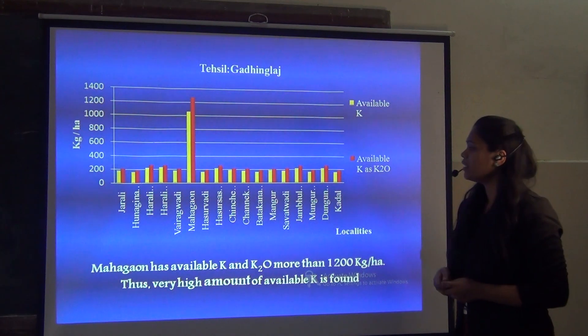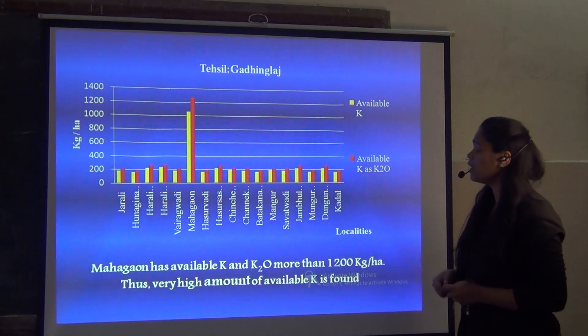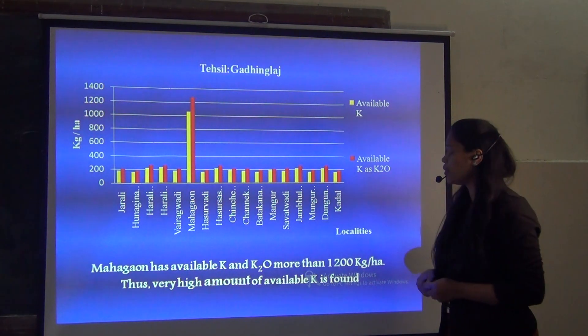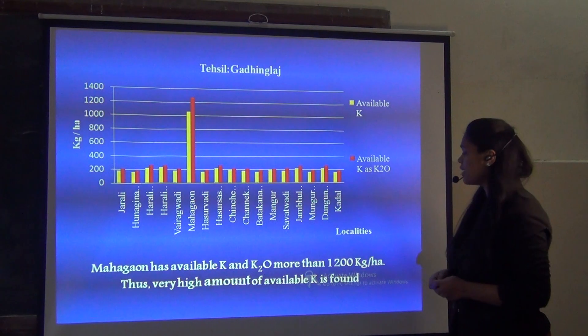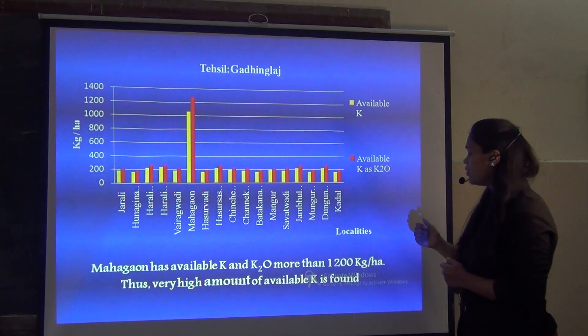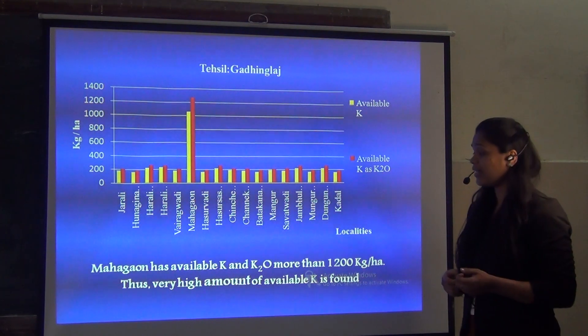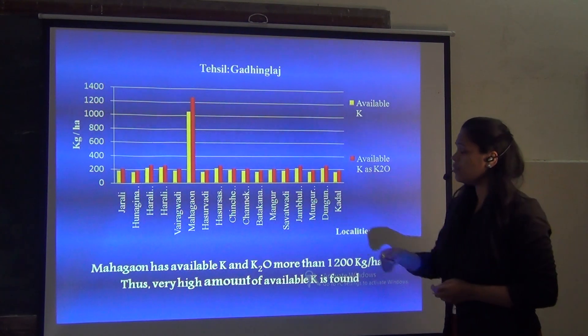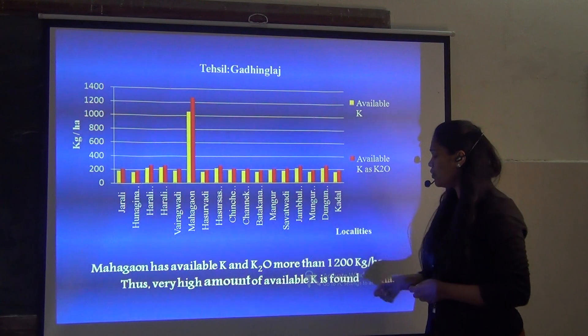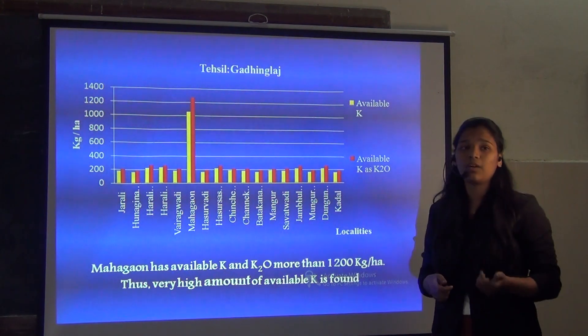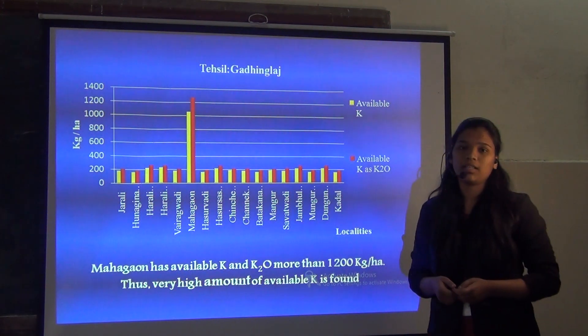From Tessit Mahagav, the available Potassium and Potassium Oxide is more than 1200 kg per hectare. There is a very high amount of available Potassium found in the Mahagav region.